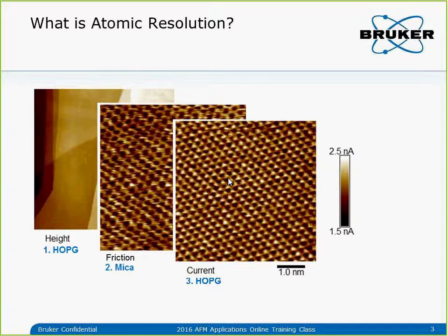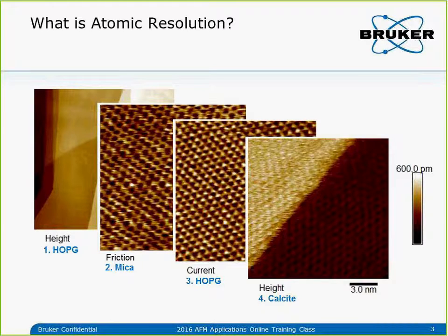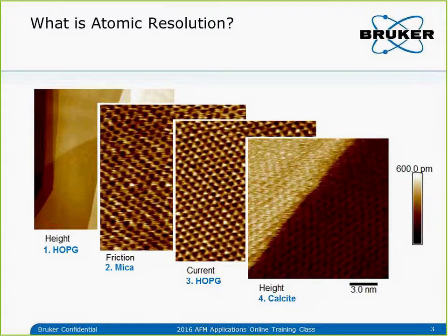The next example is HOPG with STM. You can see the lattice, and in STM we actually use a single atom to image individual lattice sites. This is true atomic resolution. The last one is calcite imaged in fluid with peak force tapping mode. The lattice spacing is about 5 or 7.5 angstroms depending on direction. The big difference compared to the previous two examples is that we can also see a single atomic step of the calcite in fluid as well as the atomic-scale lattice on each surface. We call this true atomic resolution.